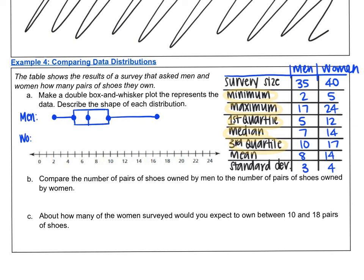Then I'll draw my box and whiskers plot for women. Minimum is five, first quartile 12, median 14, third quartile 17, maximum 24. And I'll draw my box and whiskers on that. It says describe the shape of each distribution. I would say the women have a symmetric distribution. And the men, it looks to be a little bit skewed right. The longer whisker's on the right. So I'm going to call this one skewed right.